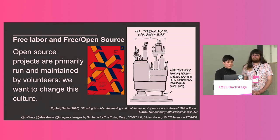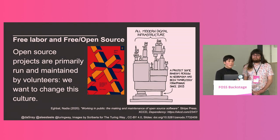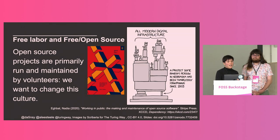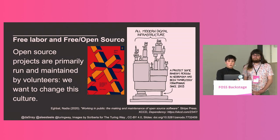One of the key questions coming out of this formalization process is: so much of open source, so much of open labor relies upon free labor. Open source projects such as the Turing Way are primarily run and maintained by volunteers, and we really want to change this culture.